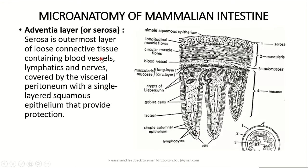The last layer of the wall of the intestine is the serosa or adventitia, which is the outermost layer of loose connective tissue containing a few blood vessels, lymphatics, and nerves. It is covered by a visceral peritoneum and consists of a single layer of squamous epithelium called the serosa, which provides protection to the intestine.